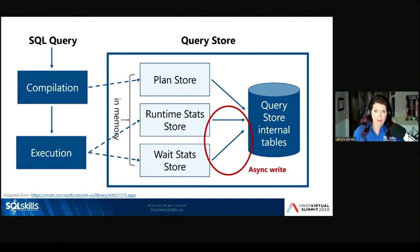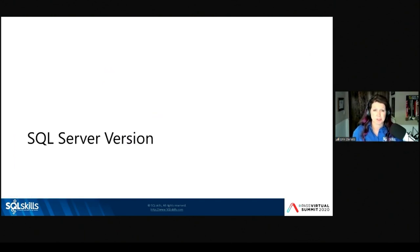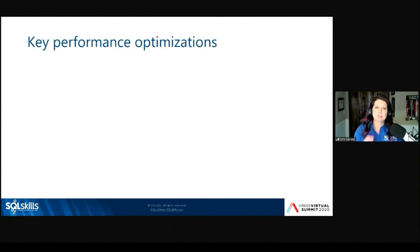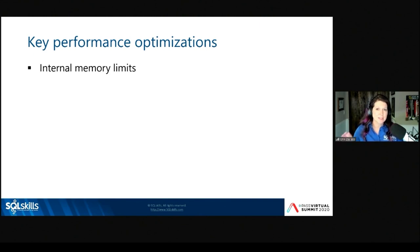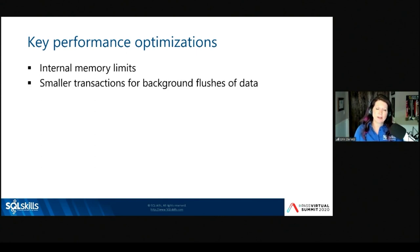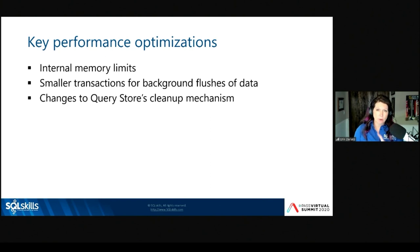Why is this important for version? Because there have been important optimizations related to overhead performance added in recent releases. Specifically: the addition of internal memory limits (which always existed on Azure SQL Database but did not originally exist on-premises); changes to make transactions smaller for background flushes; and changes to the Query Store cleanup mechanism. Let's go through each of these in more detail to highlight why version is so important.